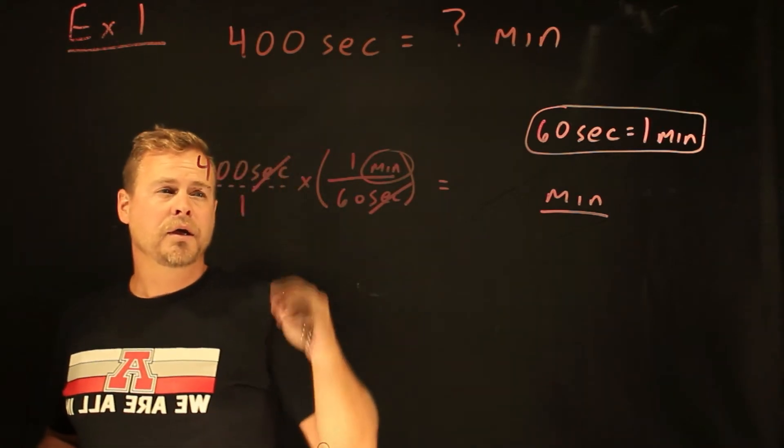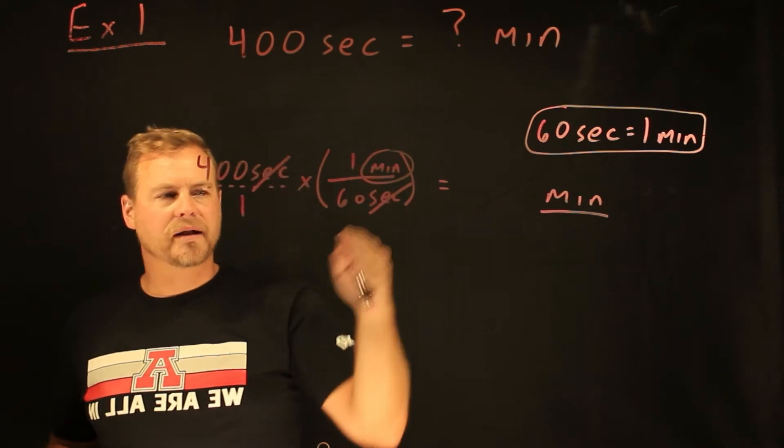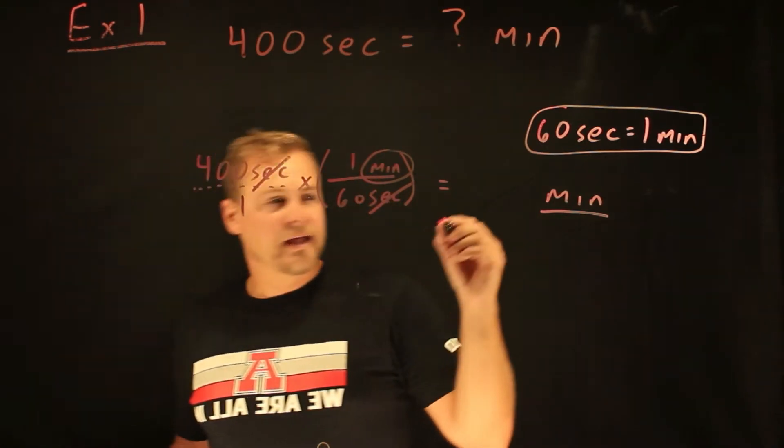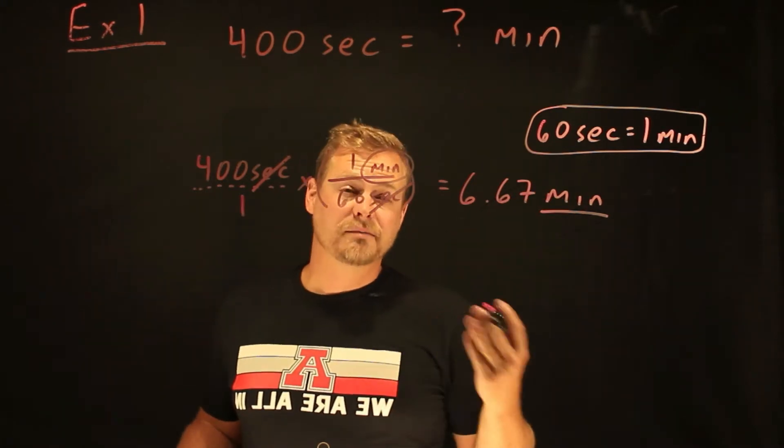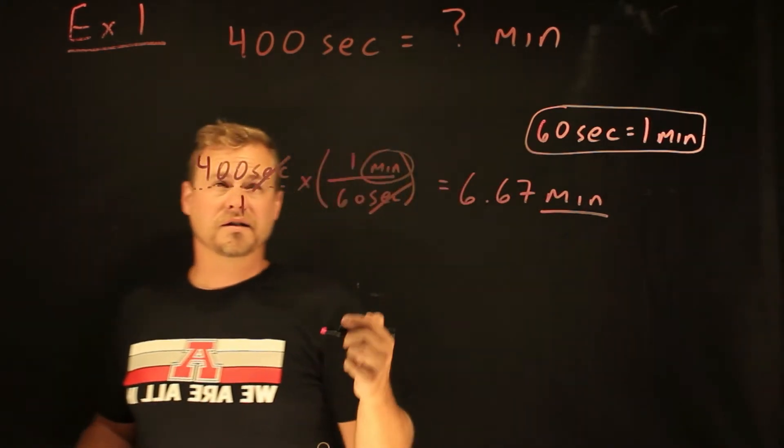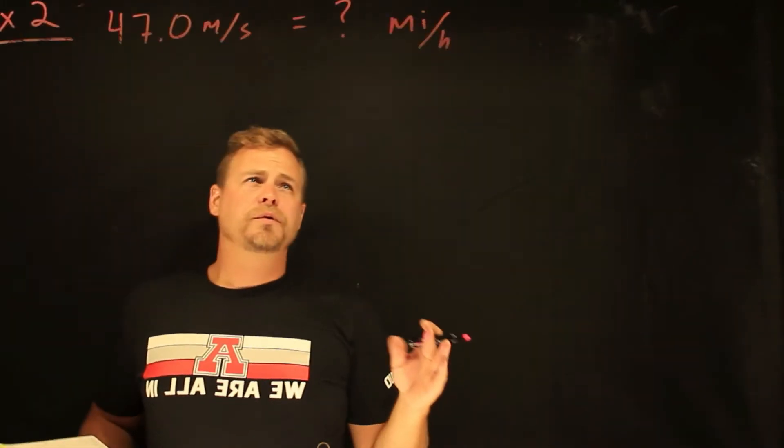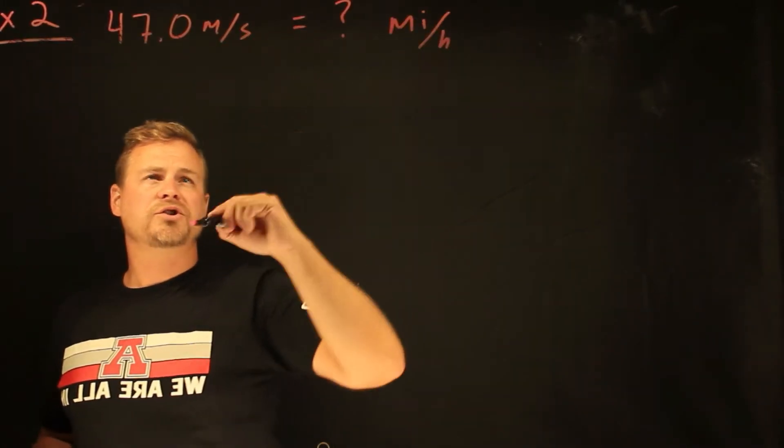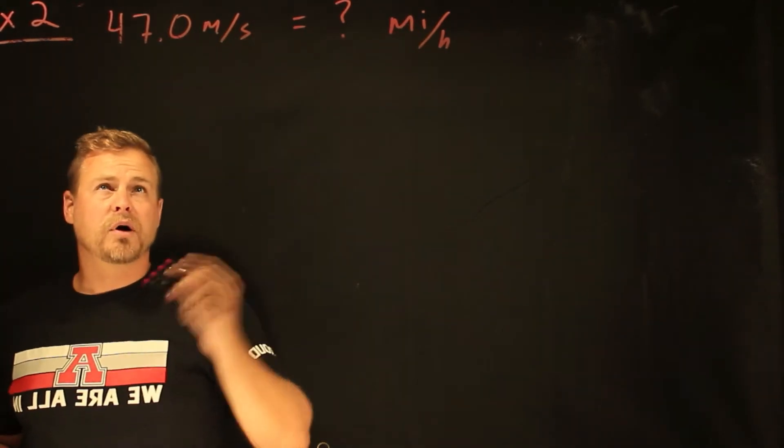And my unit that I'll have left is minutes, which is what I want. Now I do the math. 400 times 1 over 60, the same as 400 divided by 60. And if you did that math, you would come up with 6.67 minutes. And to me, that makes more sense than 400 seconds. I can relate to this. And that might be why I want to do that. We got to do a few things that my time increment has changed and my distance or my length has changed. And so I'm going to do several parts.